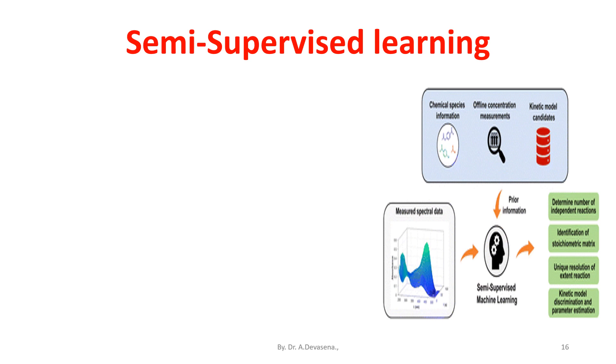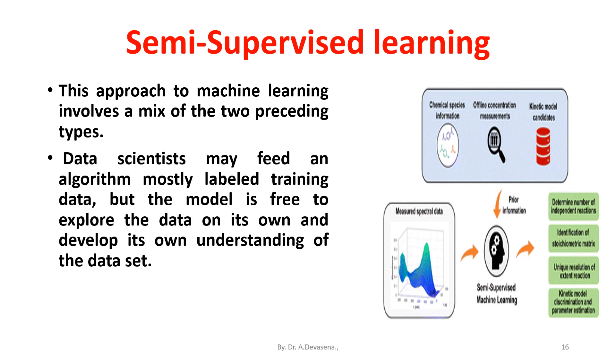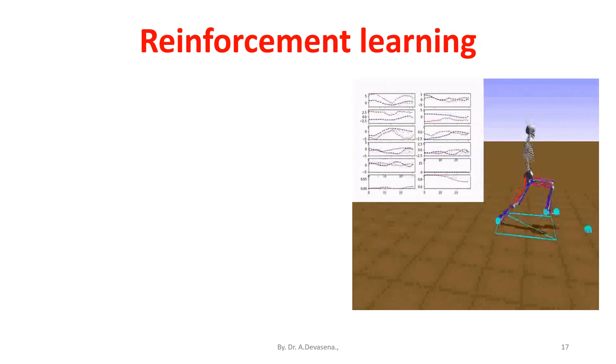Semi-supervised learning: this approach to machine learning involves a mix of the two preceding types, that is the combination of supervised learning and unsupervised learning combined together. Data scientists may feed an algorithm mostly labeled training data, but the model is free to explore the data on its own and develop its own understanding of the data set.